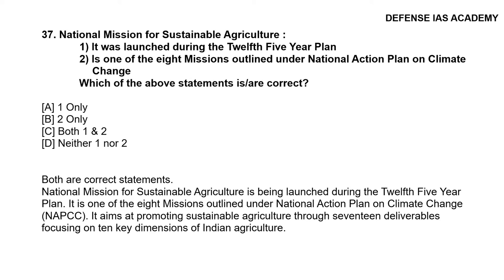Question 37: Consider the following statements about the National Mission for Sustainable Agriculture: 1. It was launched during the 12th Five-Year Plan; 2. It was one of the eight missions outlined under the National Action Plan on Climate Change. The correct answer is option C, both 1 and 2. The National Mission for Sustainable Agriculture aims at promoting sustainable agriculture through 17 deliverables focusing on 10 key dimensions of Indian agriculture.